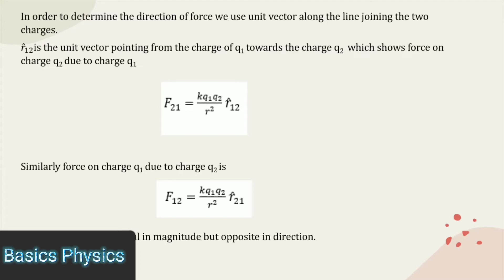Similarly, force on charge Q1 due to Q2 is F12 is equal to K times Q1 Q2 divided by R square, where R21 is the unit vector describing the direction of force. The two forces are equal in magnitude but opposite in direction.